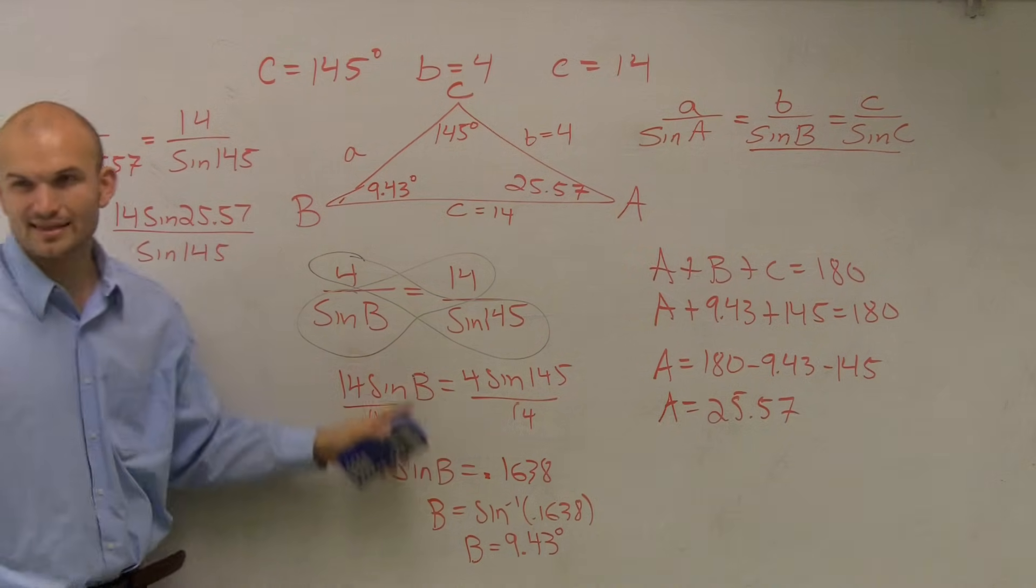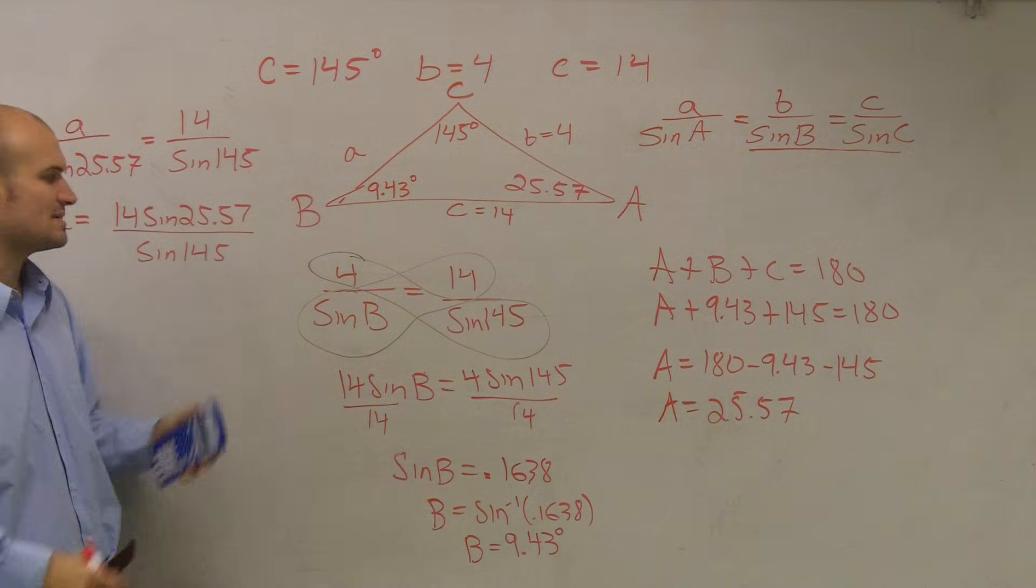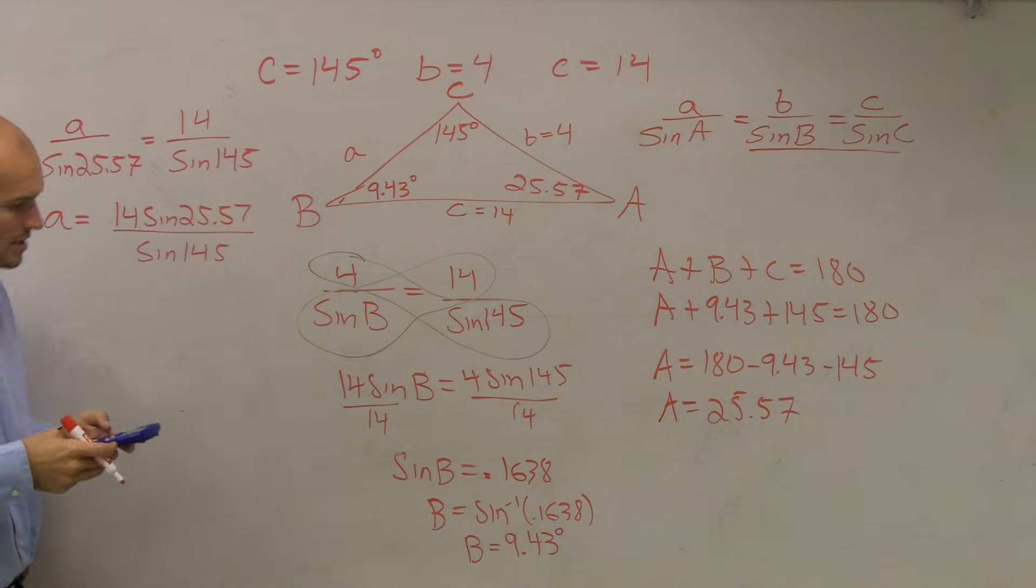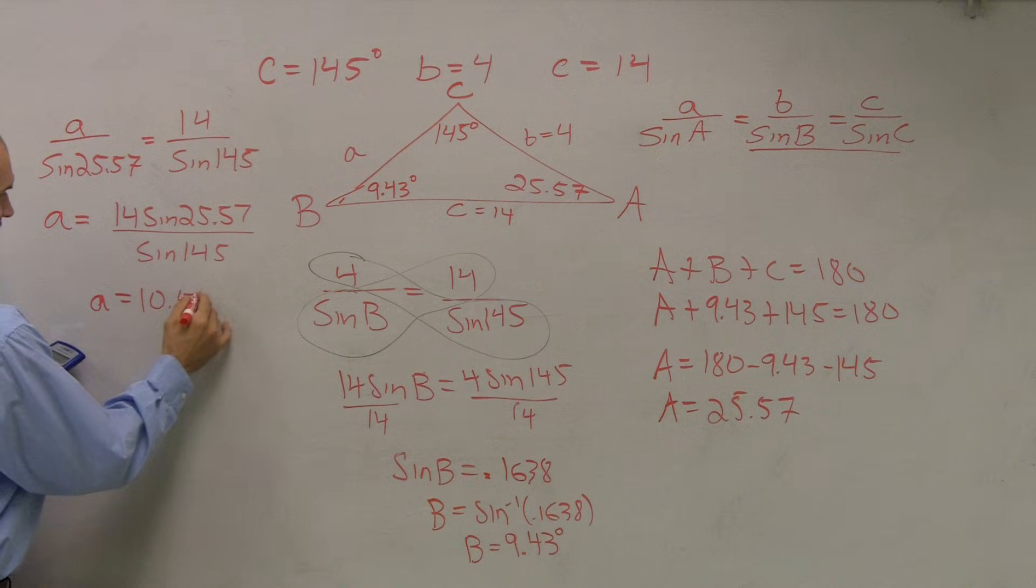How did I get that? I just did this math with this. For time purposes, I'm going to move forward. So to finalize my answer, I have 14 times sine of 25.57, and then divide that by sine of 145, and I'm equal to 10.53. So A equals 10.53.